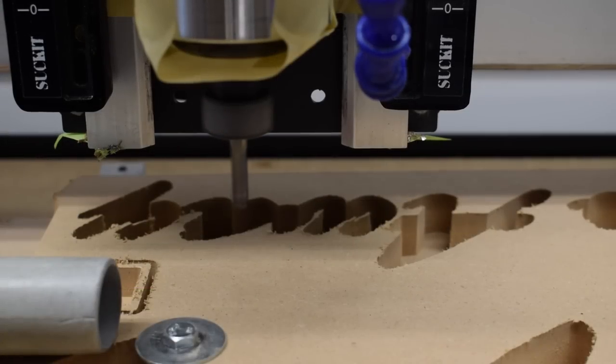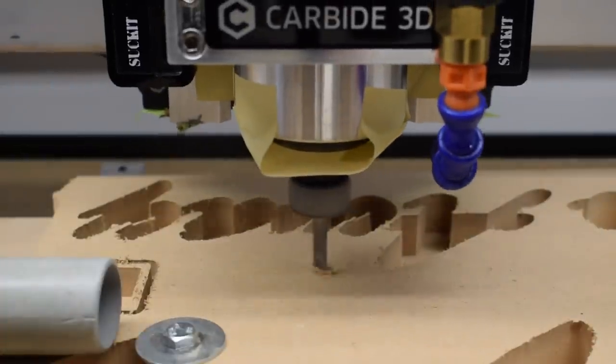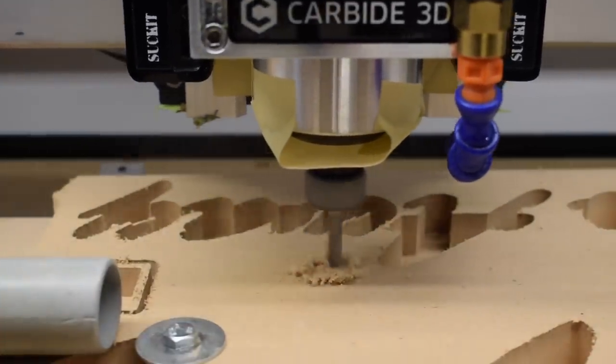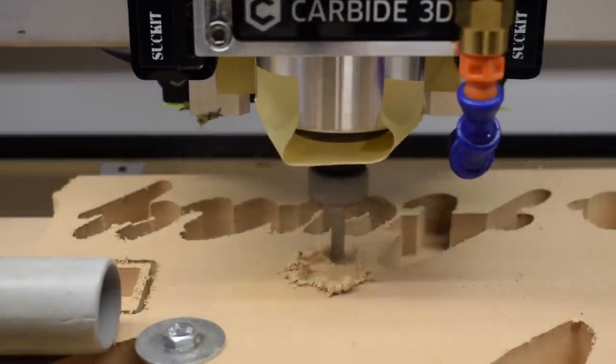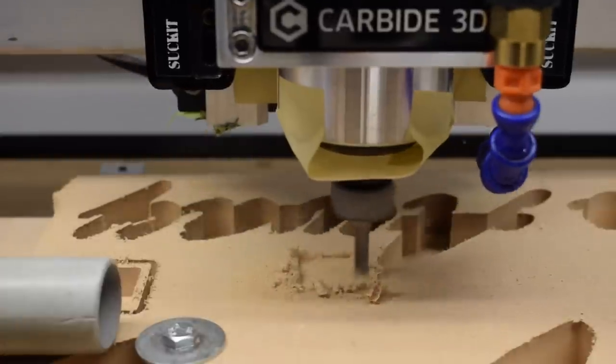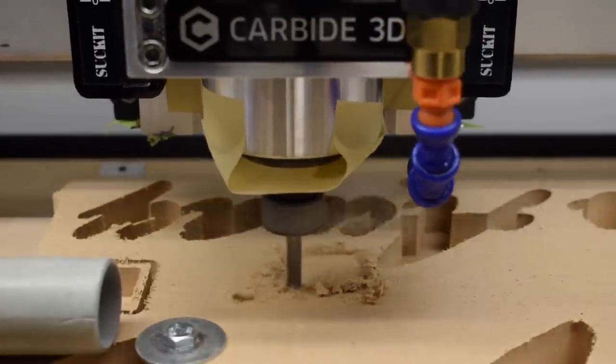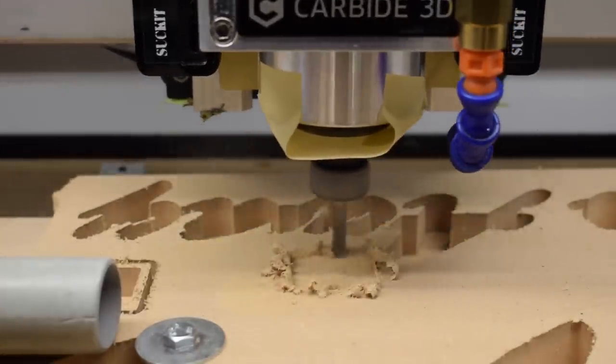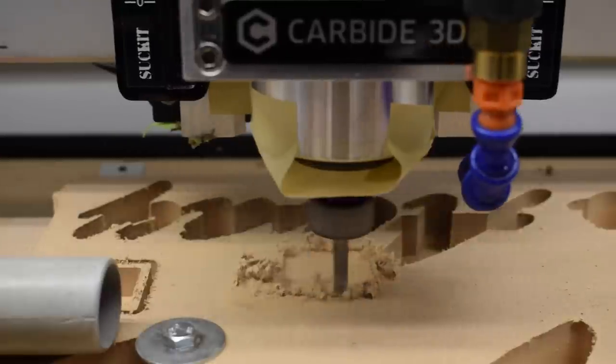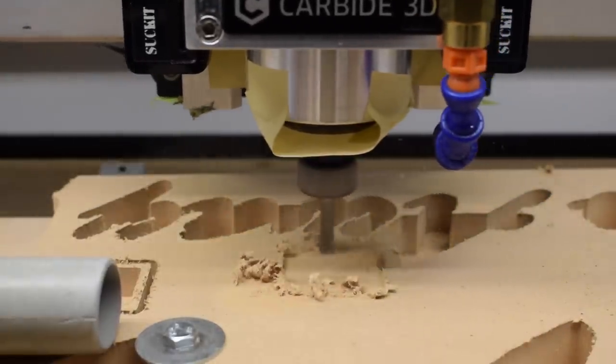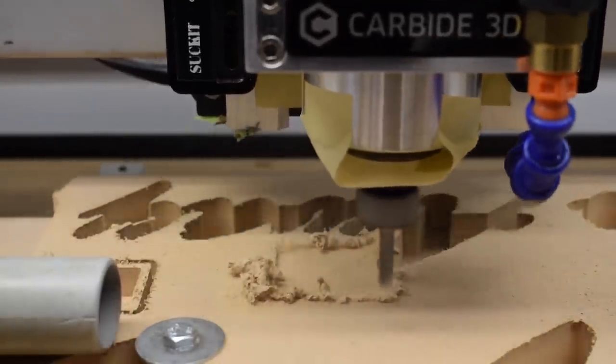So for example, tackling MDF with the 201 1/4 inch end mill at 18,000 RPM, I might go something like 90 inches per minute at a depth of cut of 0.08 inches for roughing. If I want slightly better accuracy or surface finish right off the bat, I might decrease depth or feed rate. That would bring you more in line with the speeds and feeds I gave in the previous material Monday episode.